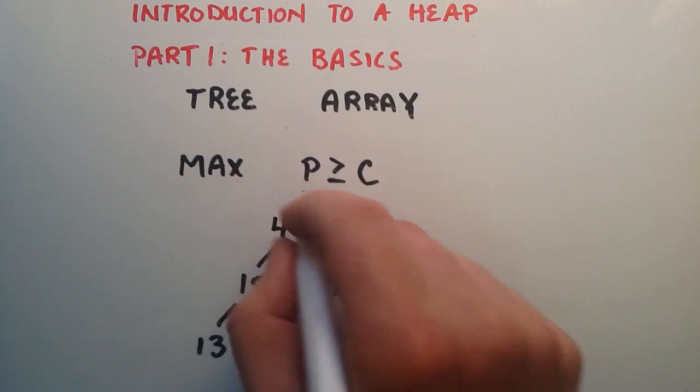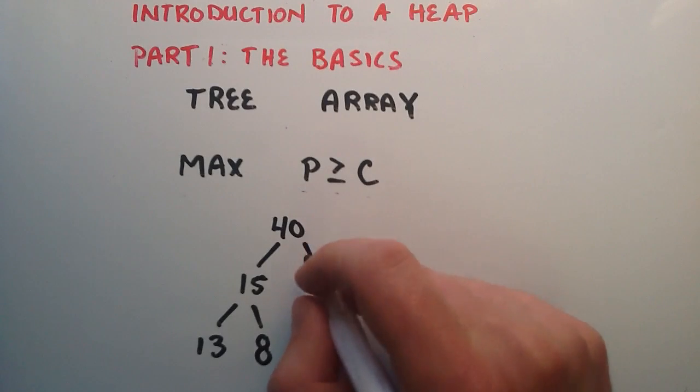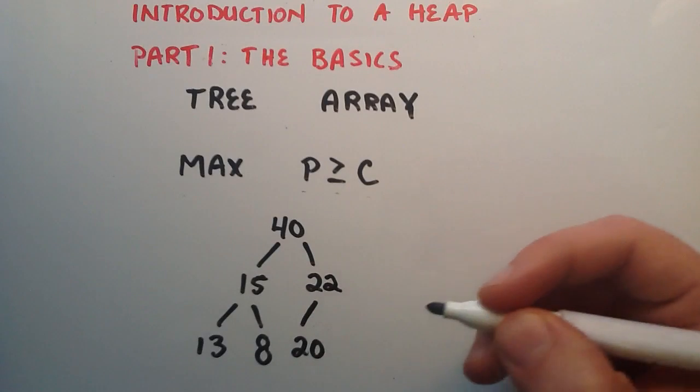And in the case of a max heap, the parent needs to be greater. So we simply run that check, and then we see that we have a greater value in the child than we do in the parent. And so we need to flip the two values. So 22 moves up here, and 20 moves down there.